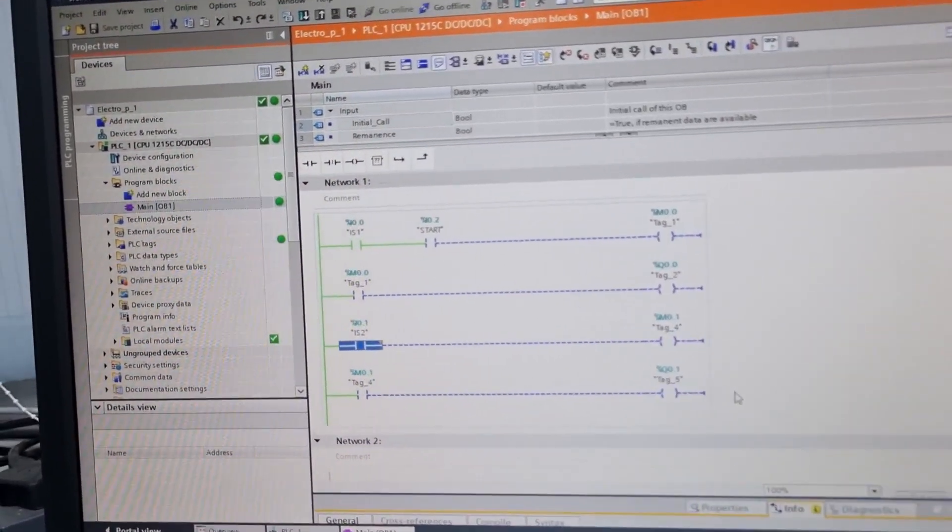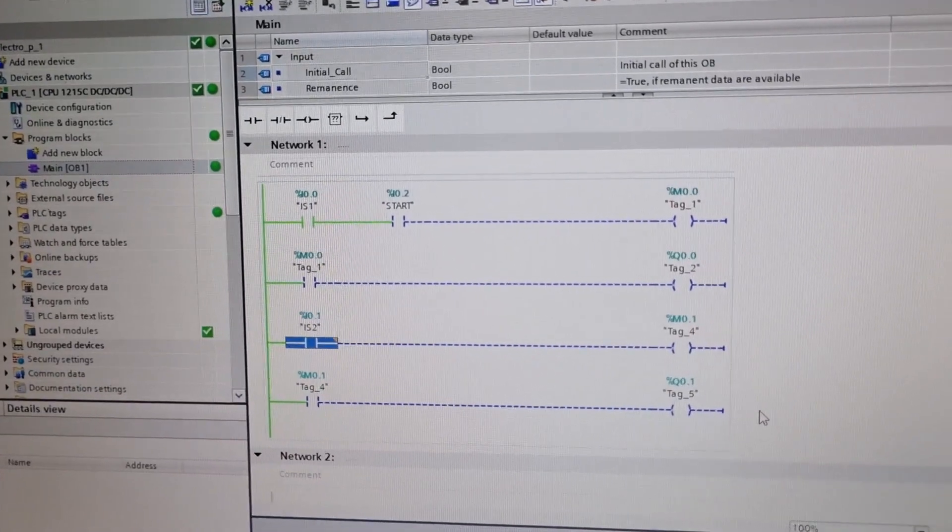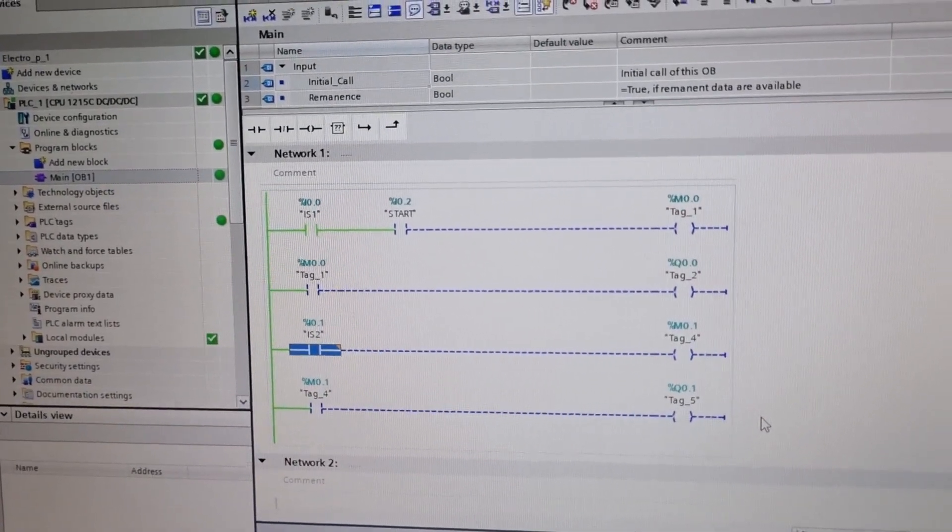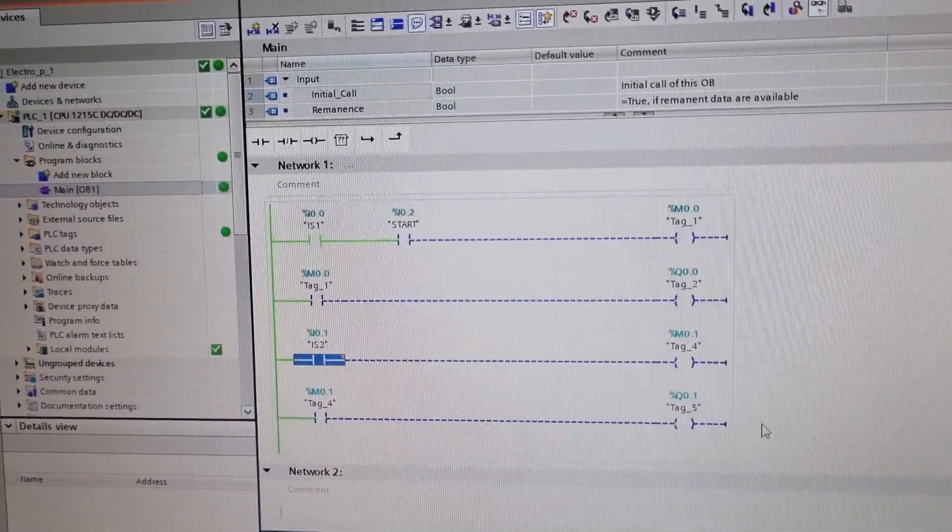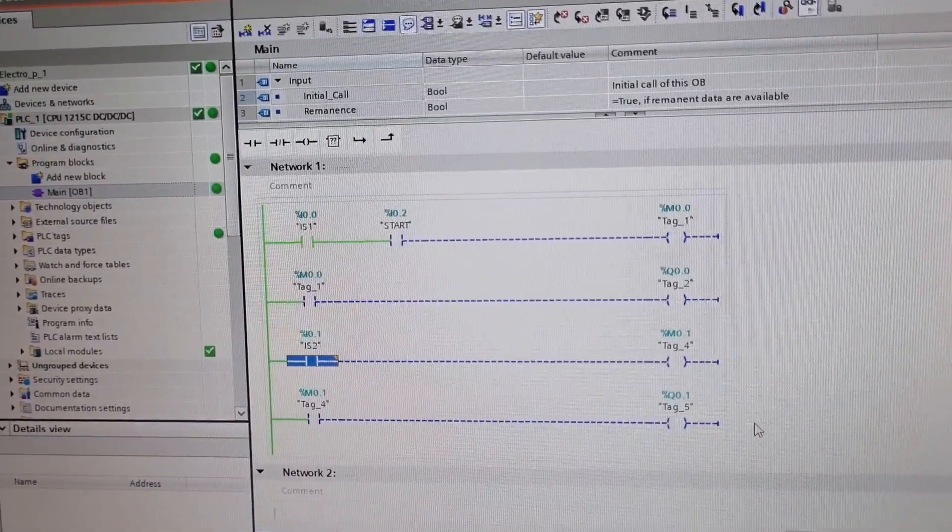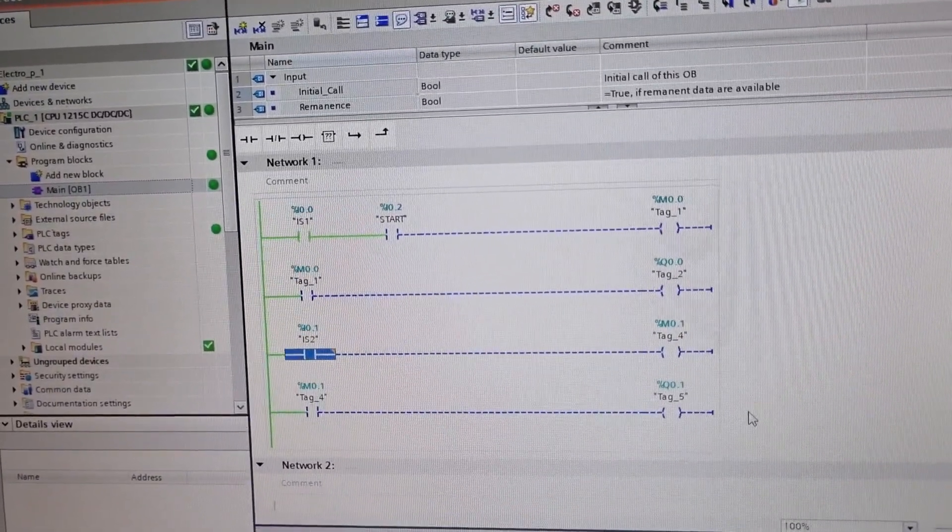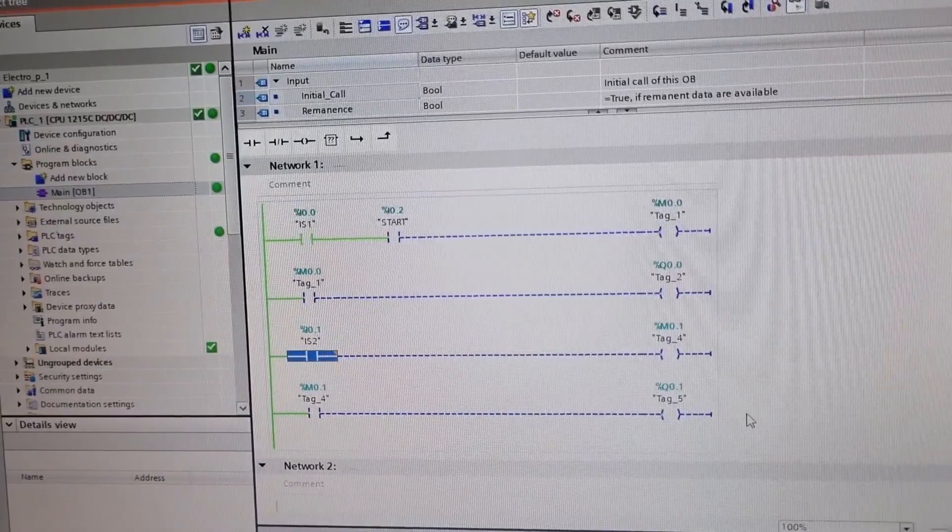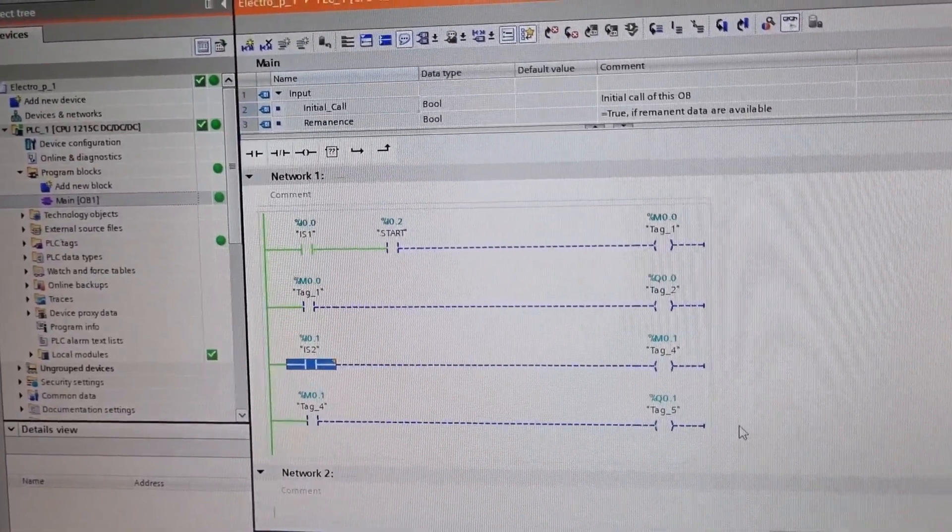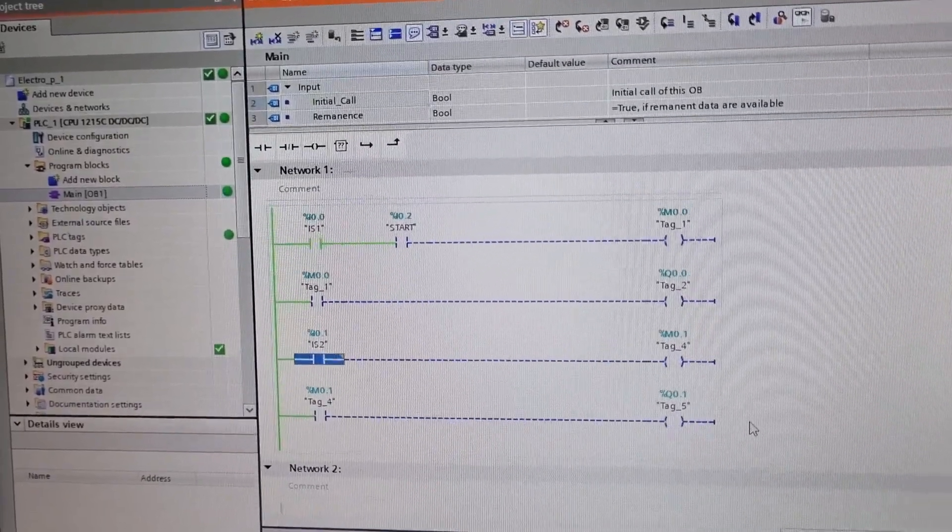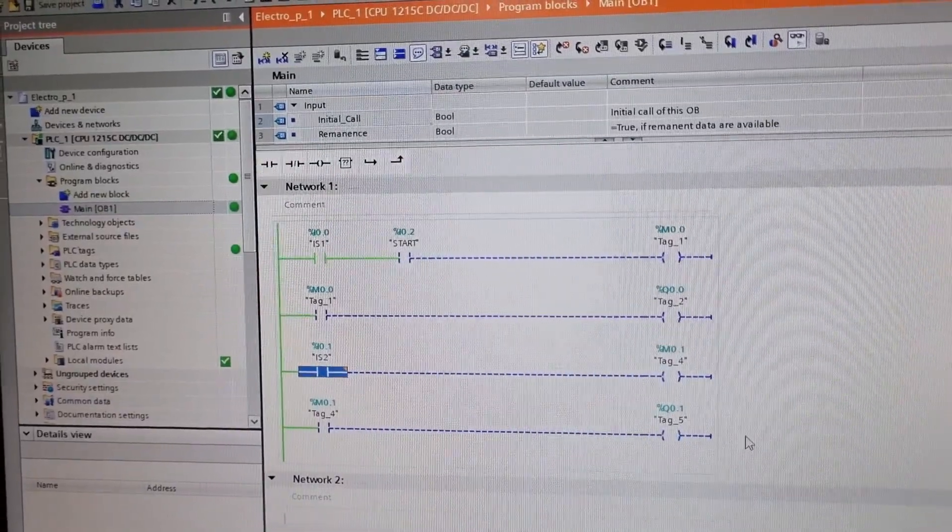Now you can see the inputs. There are three inputs total. I0.0 is my sensor which detects the retracted end position of the double acting cylinder. I0.1, that is IS2, detects the extended position of the double acting cylinder. Both are capacitive sensors.